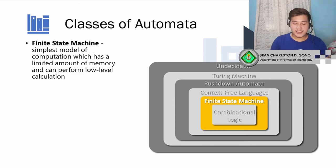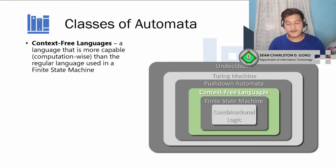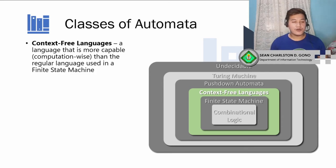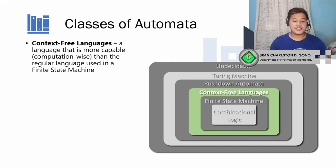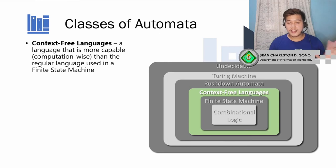The improvement on finite state machine is called context-free languages. When we talk about languages here, we're not talking about programming languages like Java or C-sharp — language means a set of strings. One of those sets of strings is context-free languages, which are more capable than finite state machines and are used by their corresponding machine type: pushdown automata.